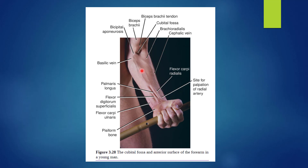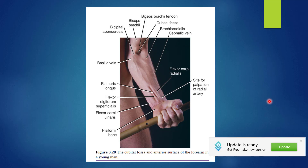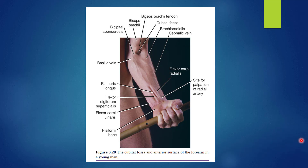You can see the surface anatomy of the cubital fossa here. It is bounded by the pronator teres medially and the brachioradialis muscle laterally. The base is formed by an imaginary line joining the medial and the lateral epicondyle of the humerus.